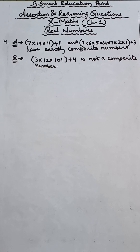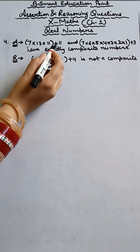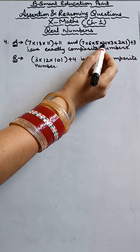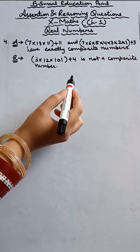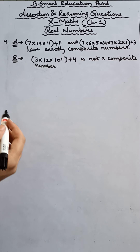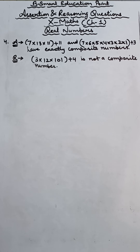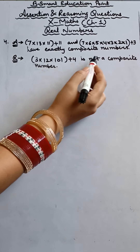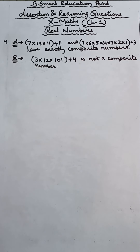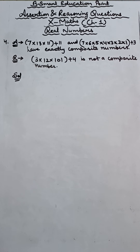This is our fourth assertion and reasoning. We have two expressions: assertion says 7×13×11 + 11 and 7×6×5×4×3×2×1 + 3 are exactly composite numbers. We need to check if both are composite numbers. The reason gives another expression which is stated not to be a composite number, and we need to check that too.